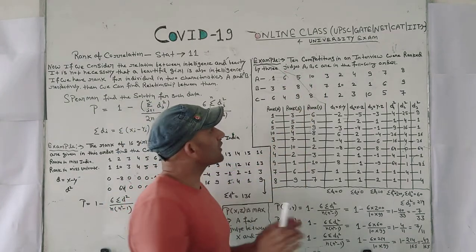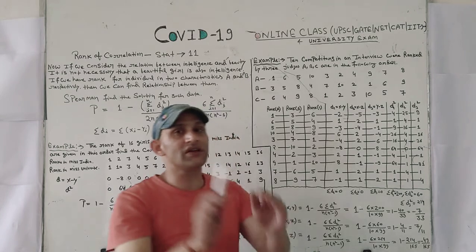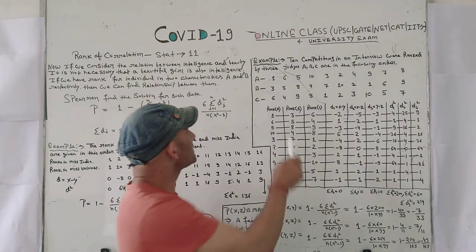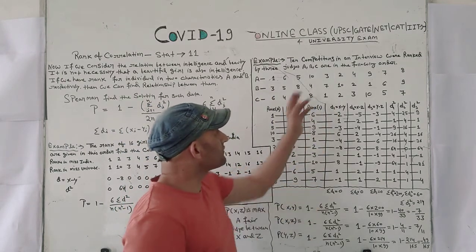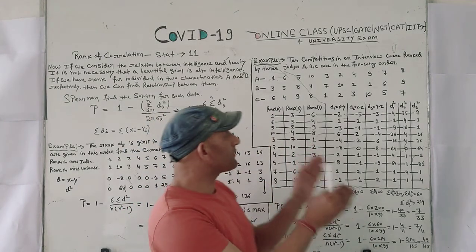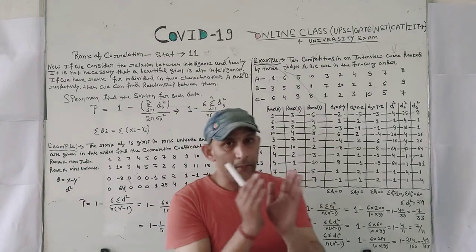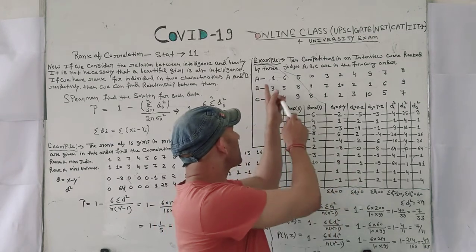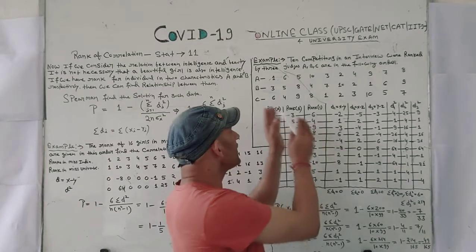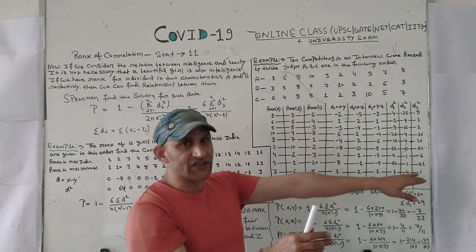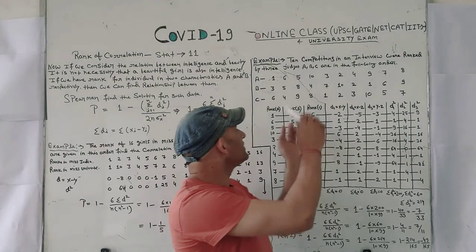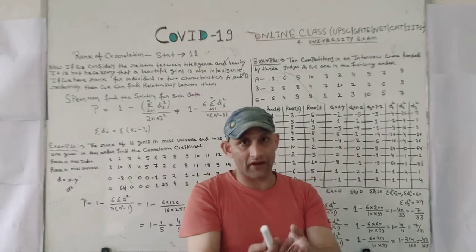Now, here you have 10 competitors in an interview. They have been ranked differently by three judges A, B, and C given in the following order. There are a total of 10 candidates who gave the interview and there are three panels — panel A, panel B, panel C. They have given different ranks to different candidates. In this condition, we will check whether each judge is fair or unfair.